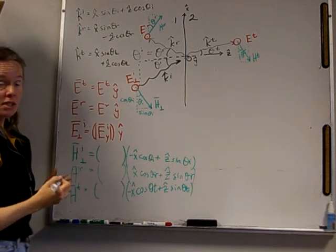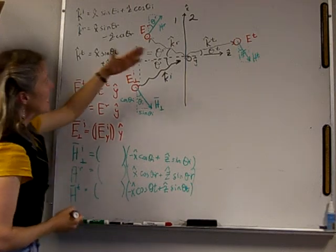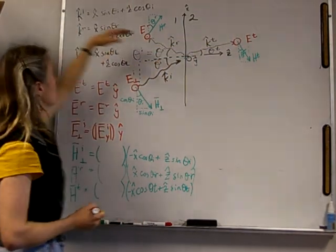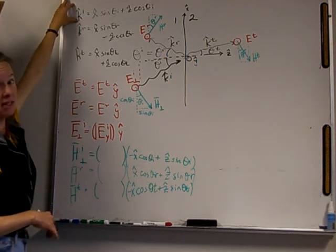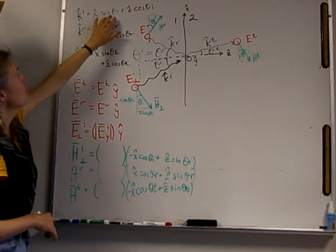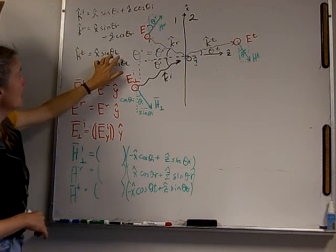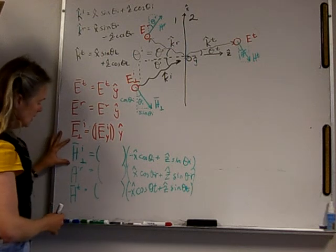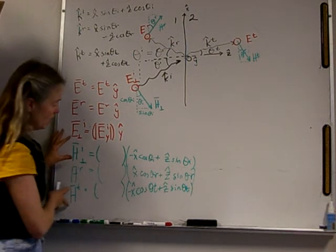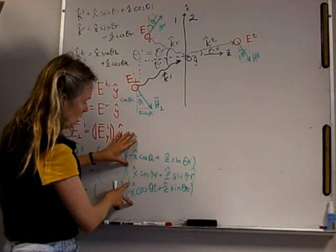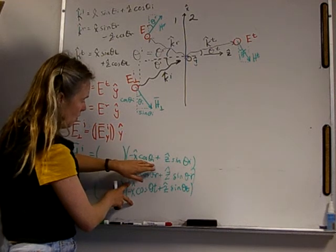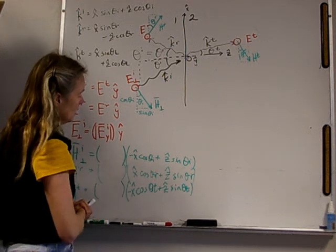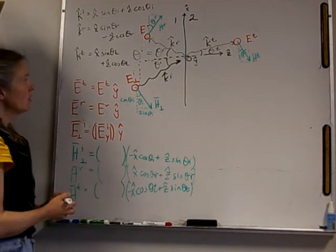Note that the incident and the transmitted vectors are approximately — in fact exactly — the same, both being positive X and positive Z, except for the fact that one uses theta I and the other uses theta T. Did that happen for the polarization too? Here are the incident and the transmitted magnetic fields — look at these two vectors. They are the same except for the actual numeric value of the angle. So that's going to make your life easier as you go through here.